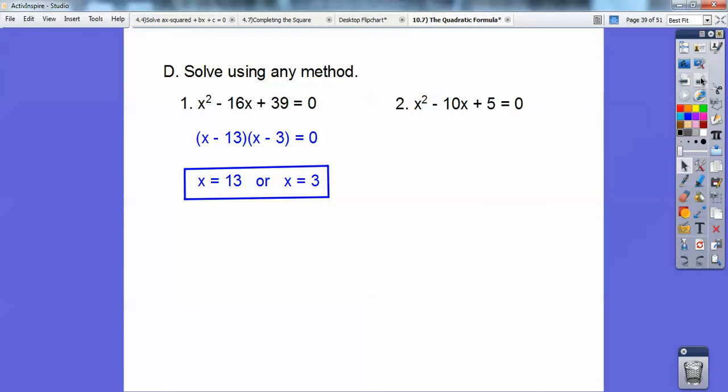How about this? Can you factor that? No, there's no factors of 5 that add to negative 10. But this one's a good completing the square because that's even and that's 1. So, by completing the square, we're going to add out this 5. So, we're going to subtract 5 from both sides and then take half a 10, which is 5, and square that, which is 25. So, I'm going to add 25 to both sides.